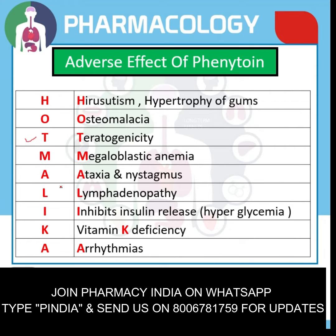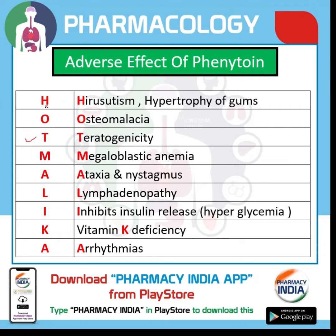It is quite interesting and funny. H denotes hirsutism and hypertrophy of gums, O denotes osteomalacia, T denotes teratogenicity, M denotes megaloblastic anemia, A denotes ataxia and nystagmus, L denotes lymphadenopathy, and I denotes inhibit insulin release, that is hyperglycemia.